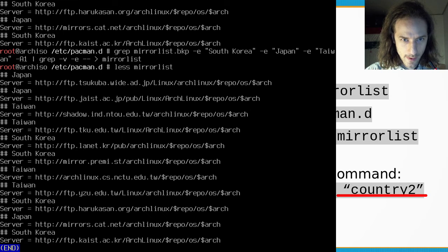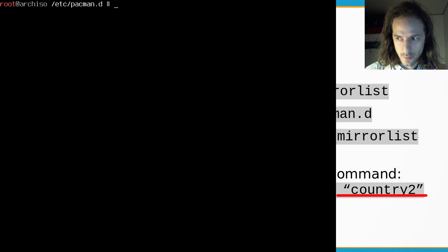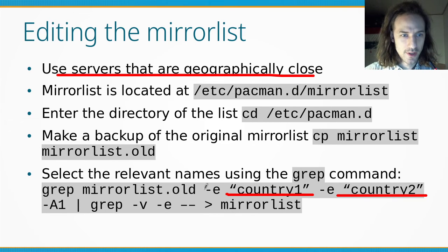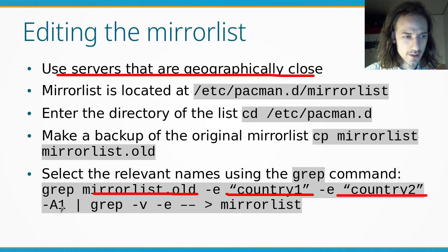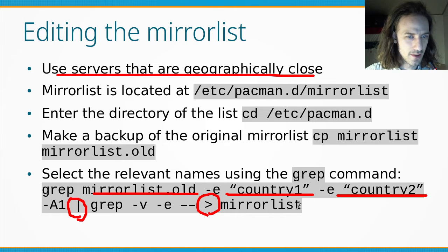We can check the contents of the file by typing less mirrorlist, and you can see Japan, Taiwan, and South Korea — all these servers are listed in our new file. To summarize: we ran grep on mirrorlist.bkp with the -e flag for three countries, -A1 to get the following line, piped that into another grep command, and redirected the output to mirrorlist. This works in bash and in zsh, which is the default shell for the Arch ISO.